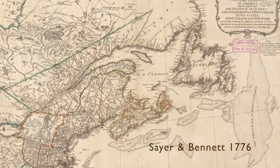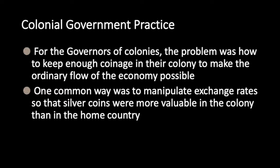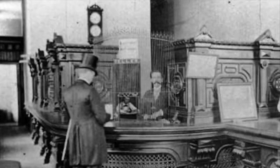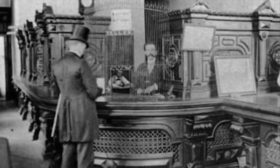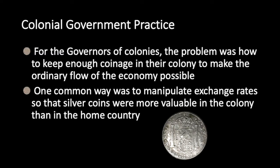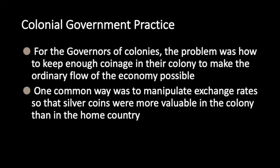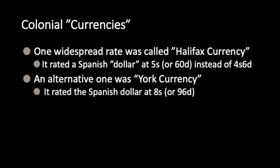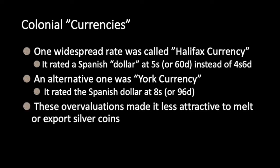Given these shortages of coinage, colonial governors struggled to ensure enough coinage was available. One tool was to manipulate exchange rates. By overvaluing gold and silver relative to the mother country, they could attract coins into the colony. A commonly used exchange rate in British North American colonies was called Halifax currency, which rated a Spanish dollar at five shillings, or 60 pence, instead of the four shillings sixpence current in England. An alternative, called York currency, rated the Spanish dollar even higher at eight shillings, or 96 pence. Such overvaluations lessened the incentive to melt down silver or export it.